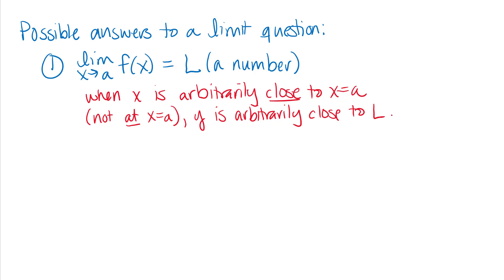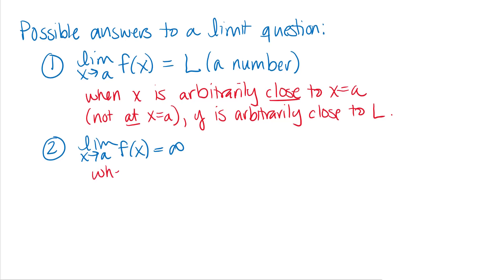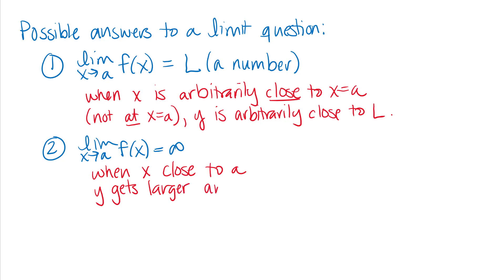Another possible answer — which we won't see until later in the chapter — is the limit as x approaches a of f(x) equals infinity. The informal idea is that when x is arbitrarily close to a, the outputs of the function grow without bound, getting larger and larger and larger with no limit to how large they get. So y gets larger and larger without bound.